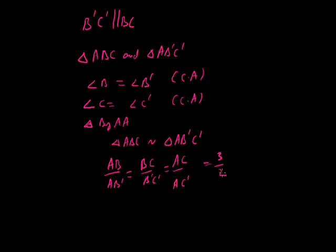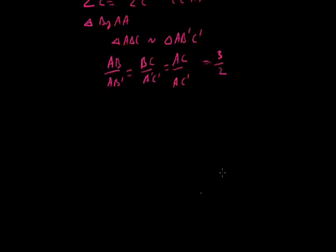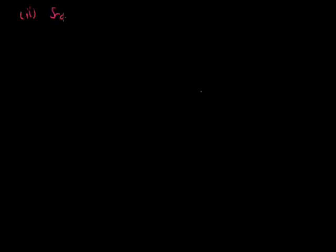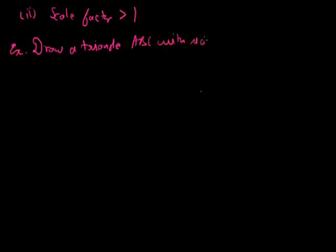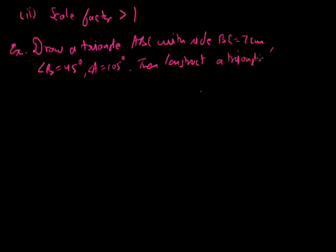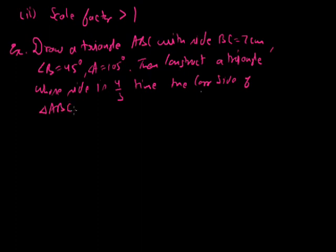We discussed the case when scale factor is less than 1. Now we consider the case when scale factor is greater than 1. Example: Draw triangle ABC with BC = 7 cm, angle B = 45 degrees, and angle A = 105 degrees. Then construct a triangle whose sides are 4/3 times the corresponding sides of triangle ABC.